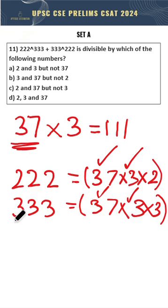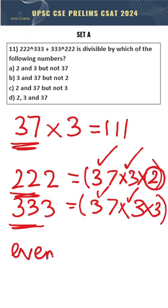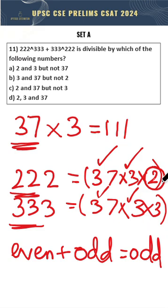But if you consider 2, this will be an even number and this will be an odd number. We know that any even number added with an odd number will result in an odd number. So the result will not be divisible by 2.